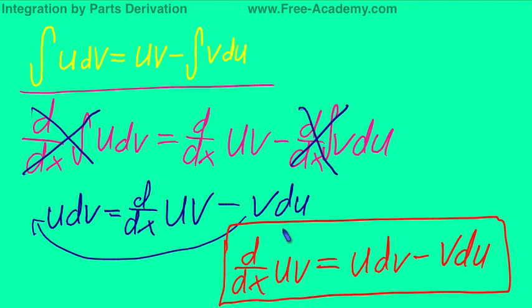If you were to replace U with F of X and V with G of X, it would be written exactly the same as the way we did it before in the derivatives part.